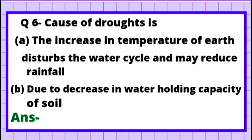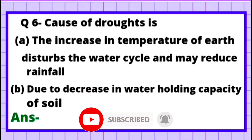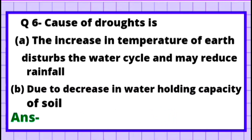Question 6: Causes of drought — Option A: Increase in temperature of earth disturbs the water cycle and may reduce rainfall. Option B: Due to decrease in water holding capacity of soil. The main reason is that when the temperature of the earth increases, it disturbs the water cycle and reduces rainfall. So the correct answer is Option A.